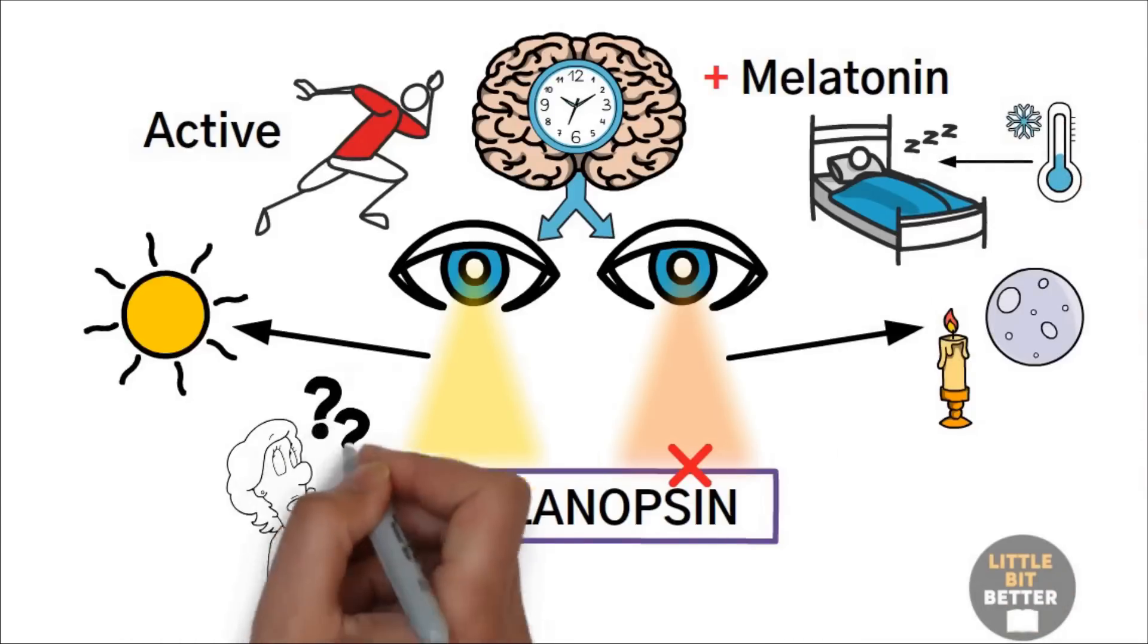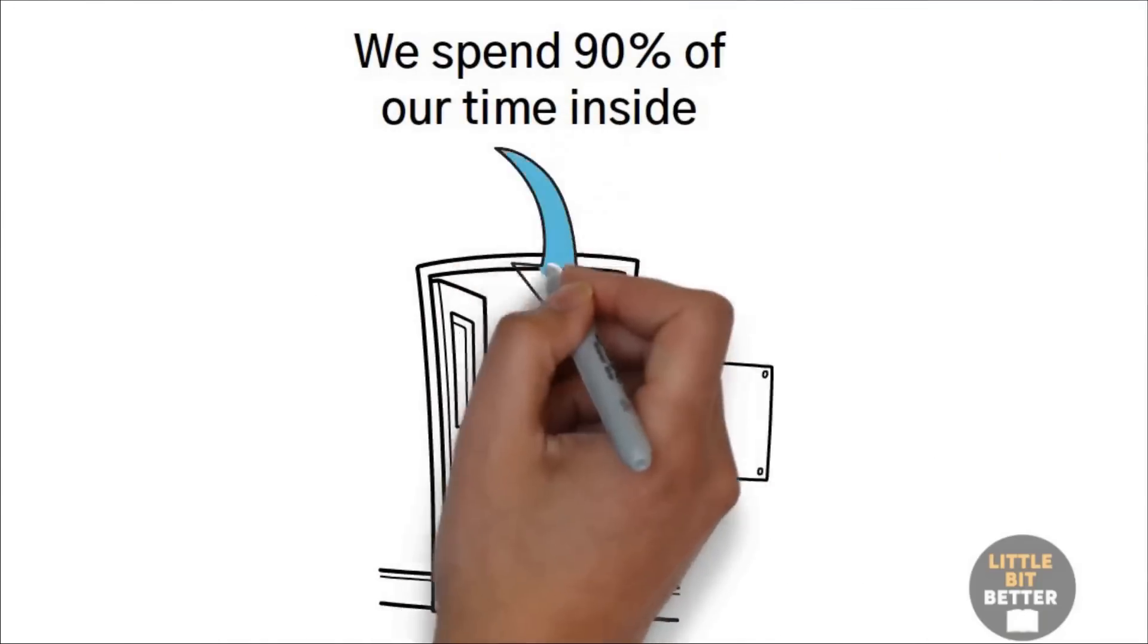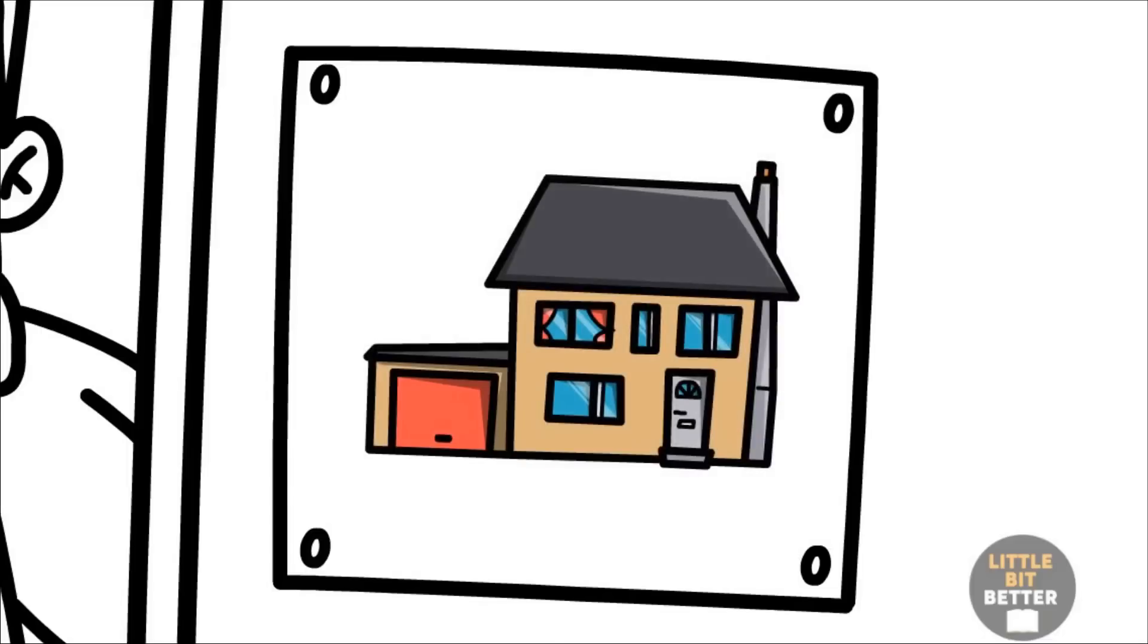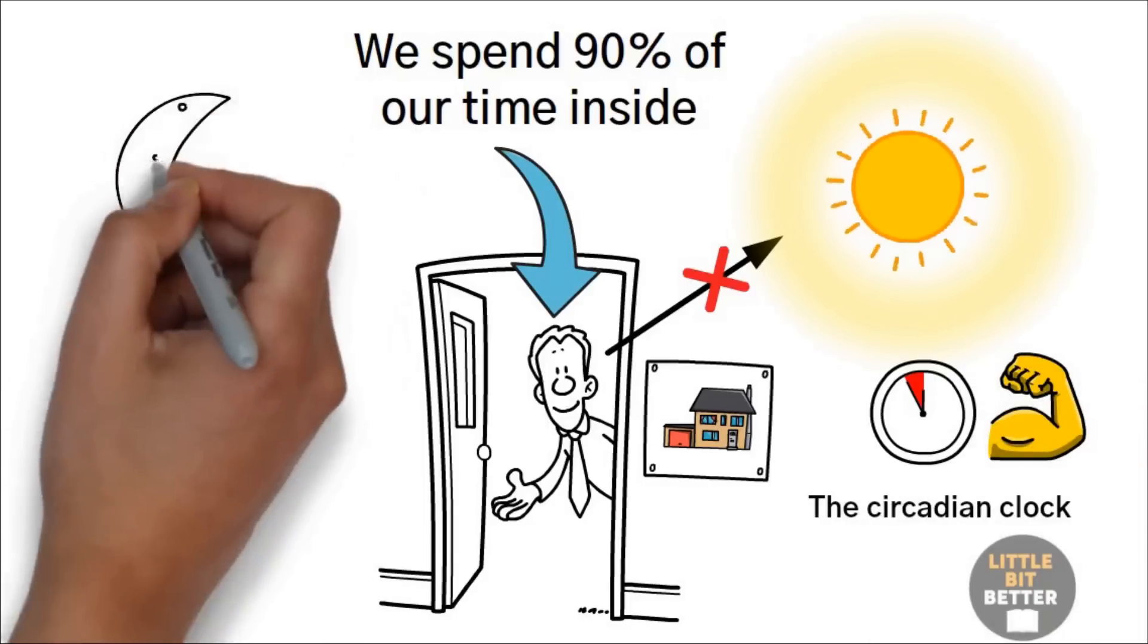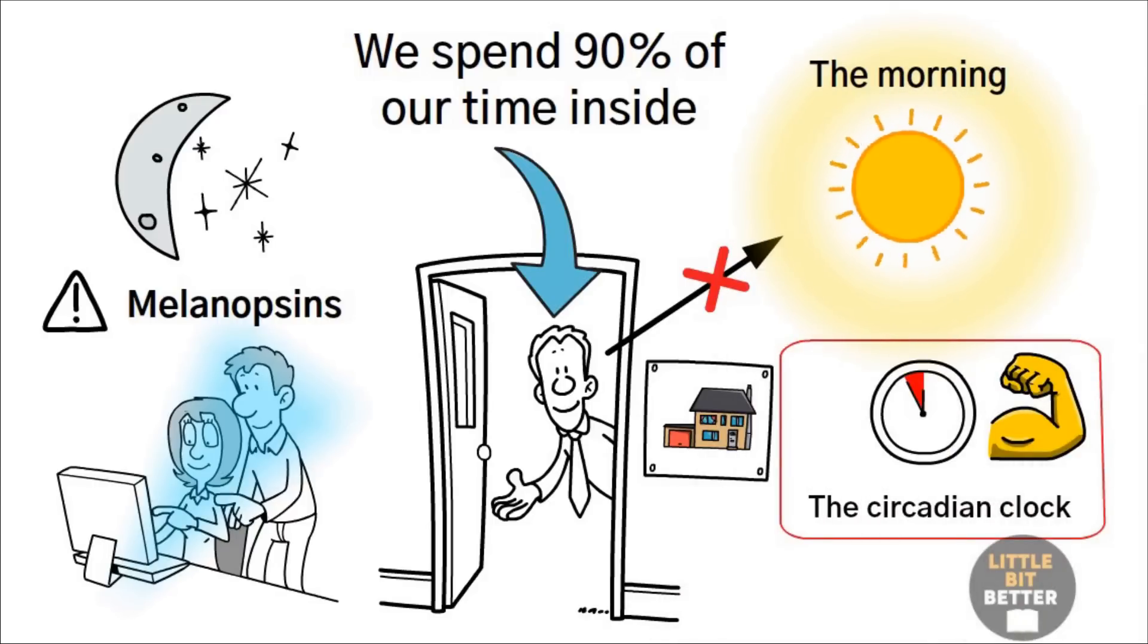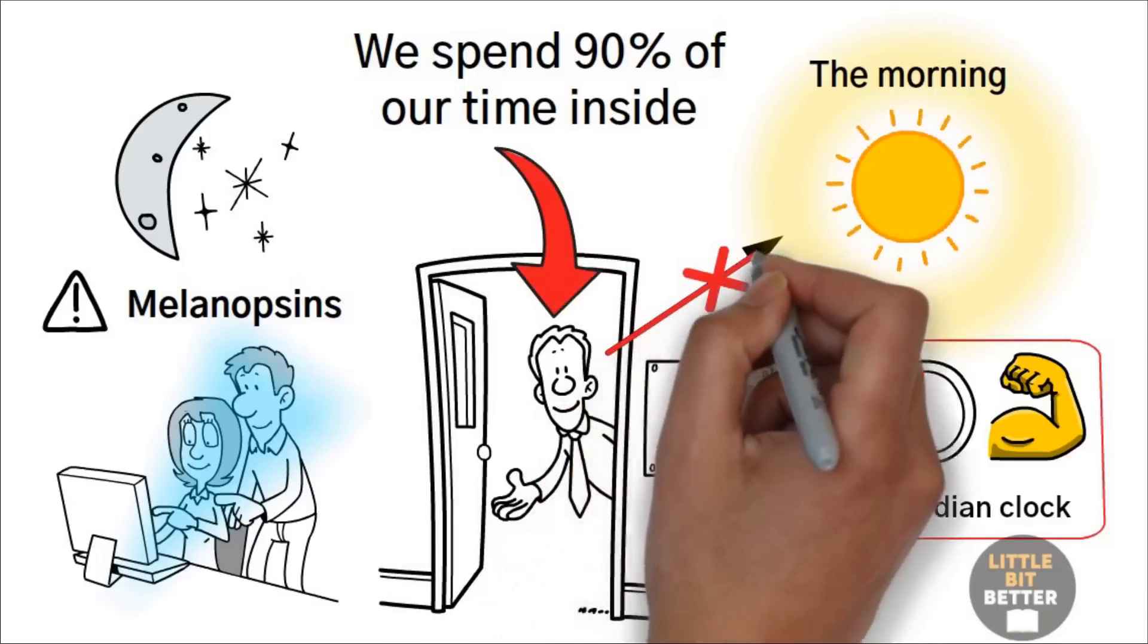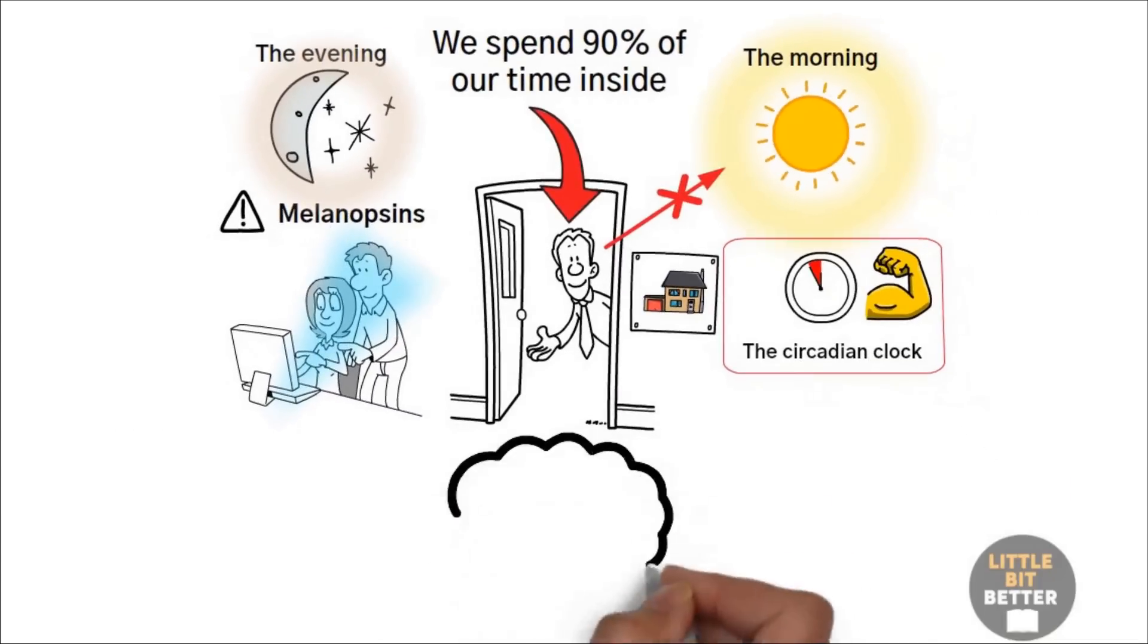You might ask, why is this information about melanopsin so important? Here's why. We spend 90% of our time inside, either in a classroom, in an office, or at home. This means you don't get the bright light that you need to activate the melanopsin to reset the circadian clock and make you active for the day. On the other hand, when it is evening, you sit in front of a computer or TV which has very bright blue light and melanopsins get activated. So in the morning, when it should get activated and prepare you to be active for the day, it doesn't because you sit in a closed environment and don't get the necessary light. And in the evening, it gets activated when it shouldn't be activated. You keep sending wrong signals to your brain and start living in this confusing world.